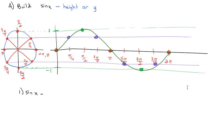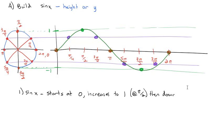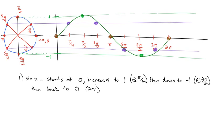What I want to notice about sine of x: it starts at 0, increases to 1, and that happens at pi over 2. Then down to negative 1, and that happens at 3 pi over 2. Then back to 0, which happens at 2 pi. If we were to extend this graph, it doesn't stop there — it continues to go up and back down on the right, and down and back up on the left.